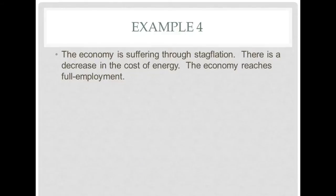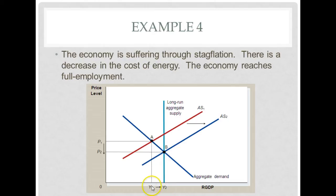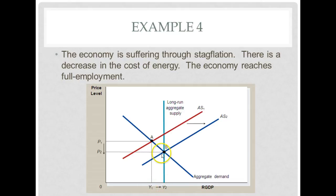Okay, let's take a look at the answer together. Aggregate supply one is here, and the aggregate demand curve is here — this is our initial starting point in stagflation. Prices are high, and RGDP is well to the left of our long-run aggregate supply curve. There is a decrease in the cost of energy. Because of that, the cost of producing things is going to decrease. That will increase the aggregate supply curve, and because of that, prices will decrease and our GDP will increase as the aggregate supply curve shifts to the right. Because we're coming back to full employment, we shift it all the way back to long-run equilibrium.